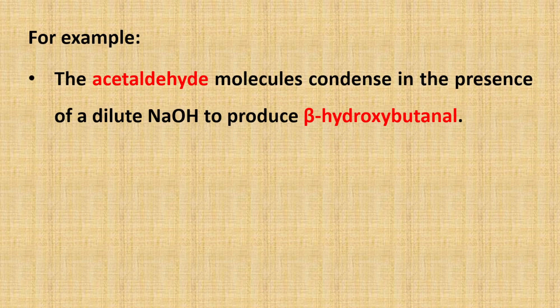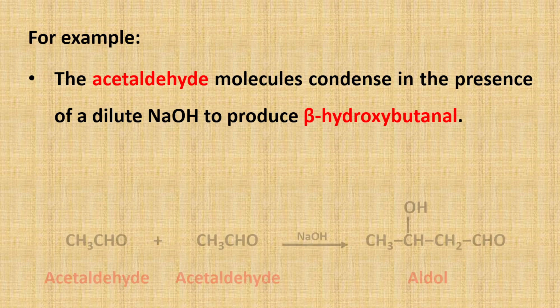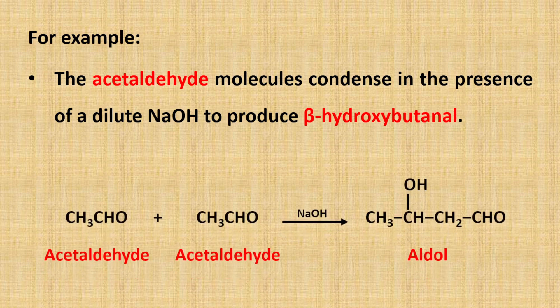Now consider one example of aldol condensation. Two molecules of acetaldehyde condense in the presence of dilute sodium hydroxide to produce beta-hydroxybutanal. Other bases such as barium hydroxide or calcium hydroxide may also be used in place of sodium hydroxide. Here, the beta-hydroxybutanal is an aldol — a combination of aldehyde and alcohol: ALD comes from aldehyde while OL comes from alcohol.